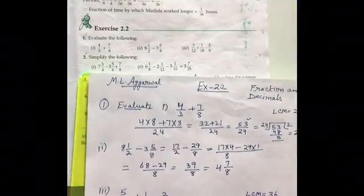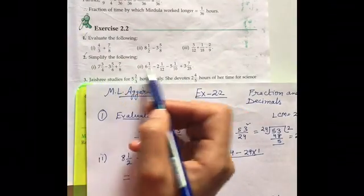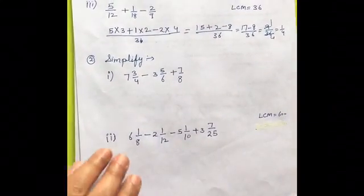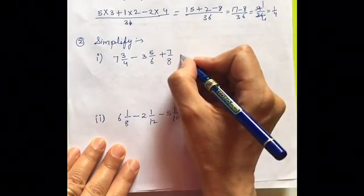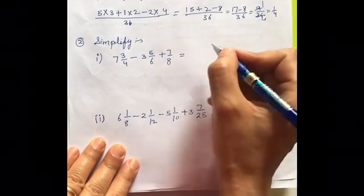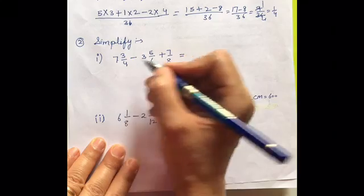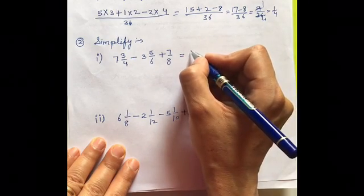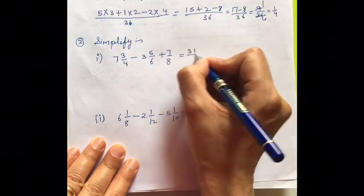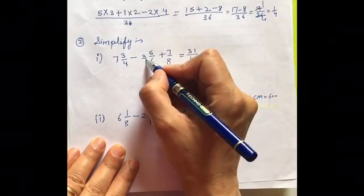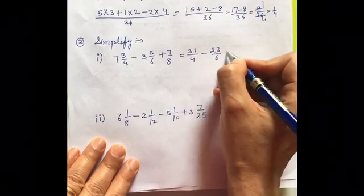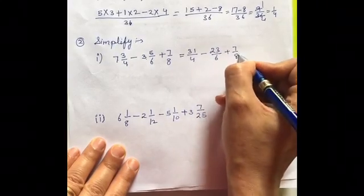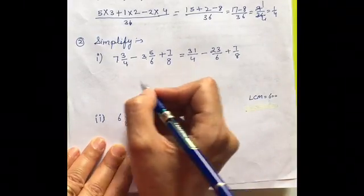Now, the second question. These questions we have to solve. Simplify. So, let us see how we are going to do them also. Here in this case for the first step will be the same. First, you will have to make them improper. 7, 4, 28, 29, 30, 31 upon 4 minus 6, 3, 18, 18 plus 5 is 23 upon 6 plus 7 by 8. Now, take the LCM.